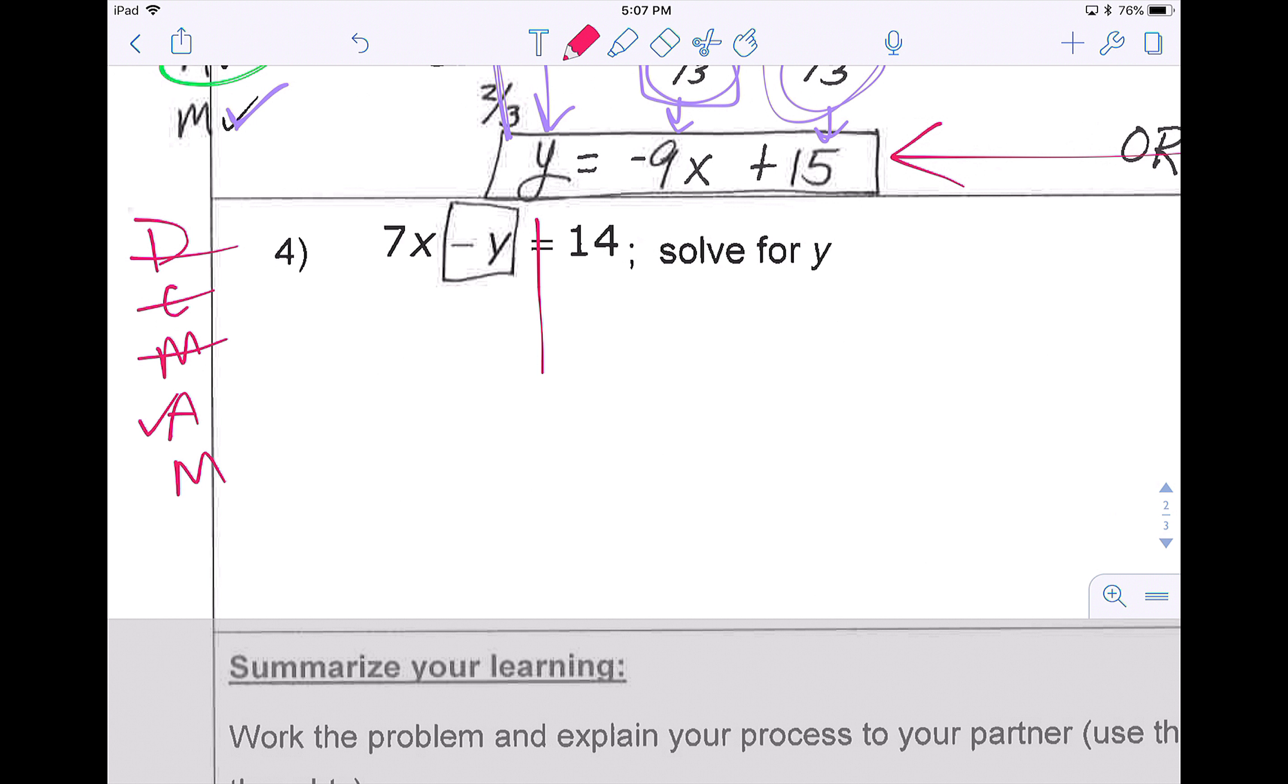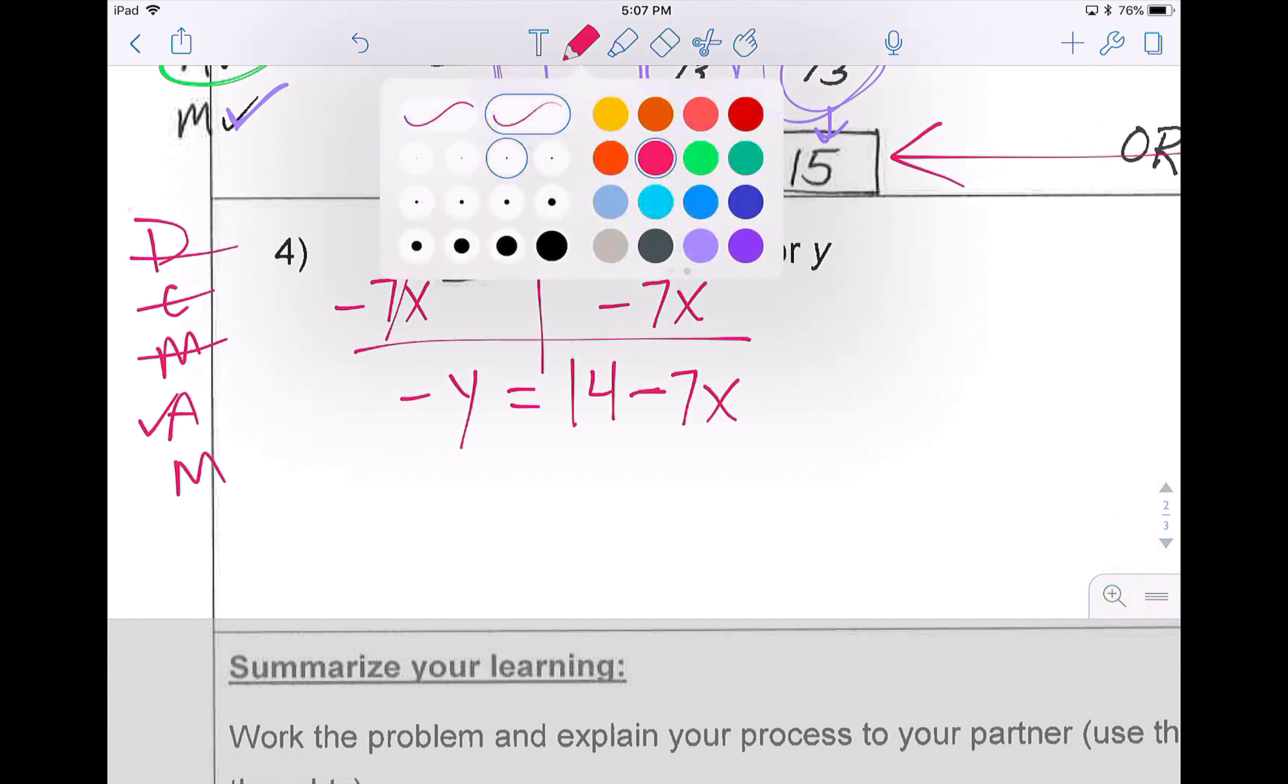On the left side, I'm left with my box, negative y. On the right side, I have 14 minus 7x. You could also write negative 7x plus 14. I need this to catch up. There we go.